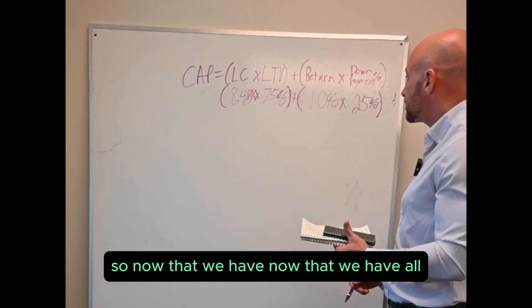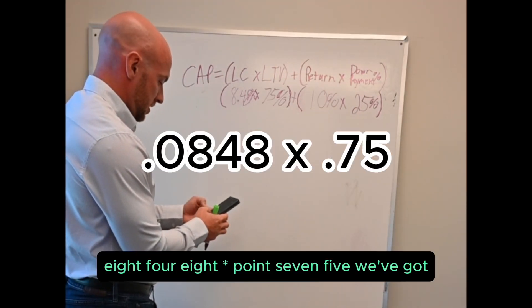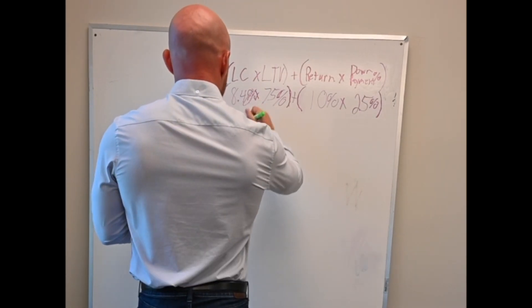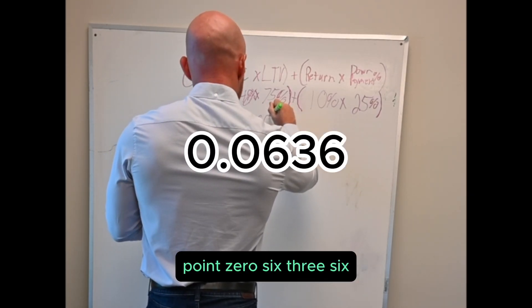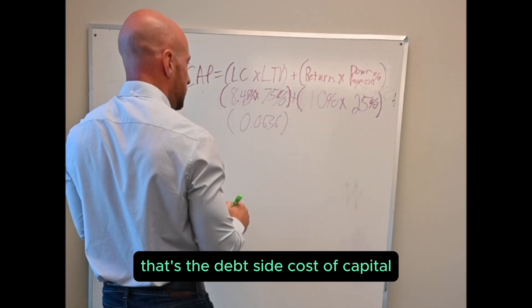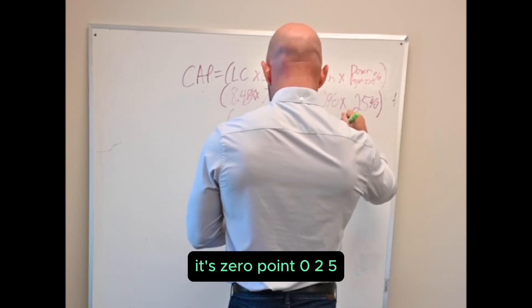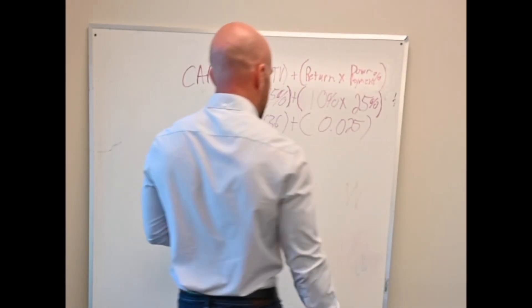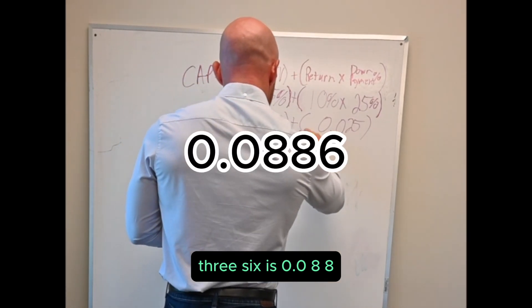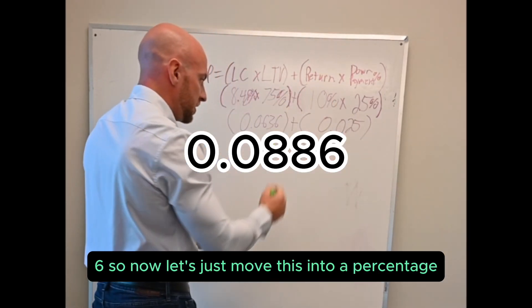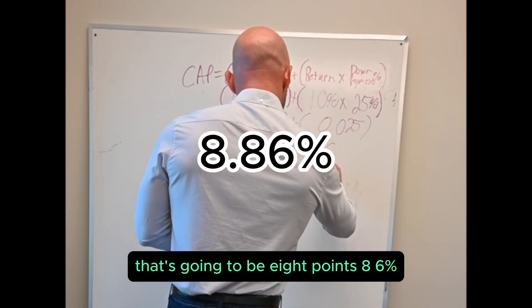So now that we have all of our numbers, we have the equation, we just got to use our calculator here. We got 0.0848 times 0.75, I'm going to start writing it down in decimals by the way so I don't want to confuse you too much. That's 0.0636, that's the debt side cost of capital. Now the equity side cost of capital is 0.1 times 0.25, that's 0.025. Now we just add them together, plus 0.0636 is 0.0886. So now let's just move this into a percentage, so we're going to move the decimal point over two points. That's going to be 8.86 percent, and that is your cap rate once the property is fully stabilized.